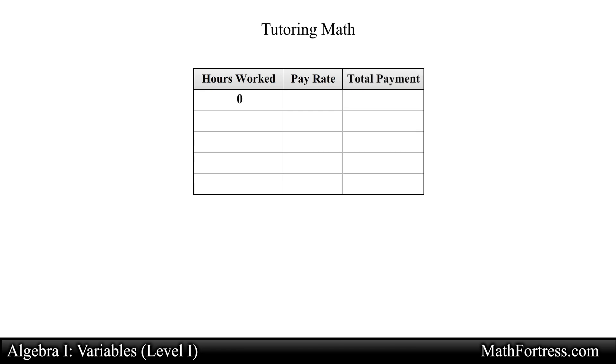If you don't work, don't expect to get paid anytime soon. So if you work for zero hours, multiply that by your pay rate, you get zero as expected. If you work for one hour, you will receive $12. For two hours of tutoring, you will receive $24. For three hours, you will get $36 and with four hours of tutoring, you will get $48. Not bad, tutoring math pays off.